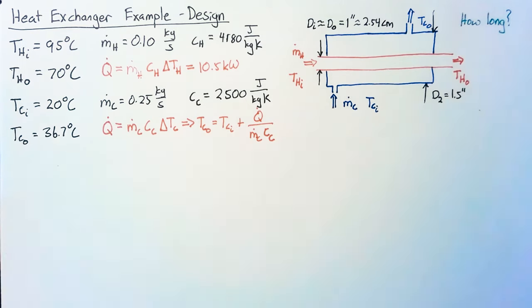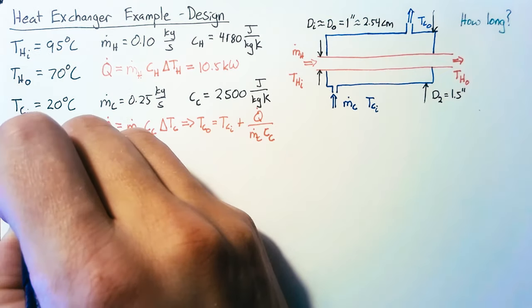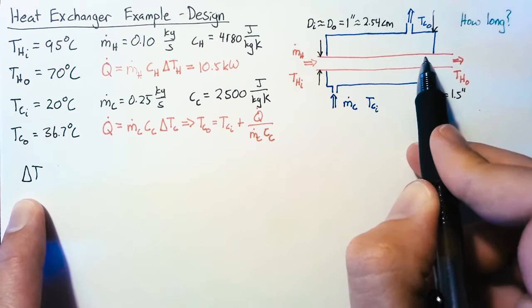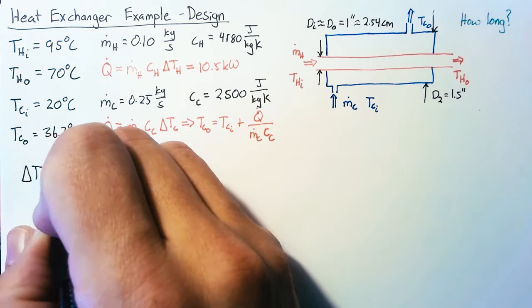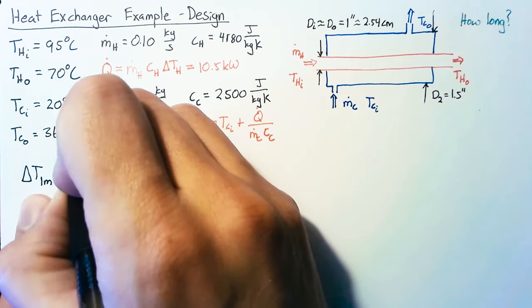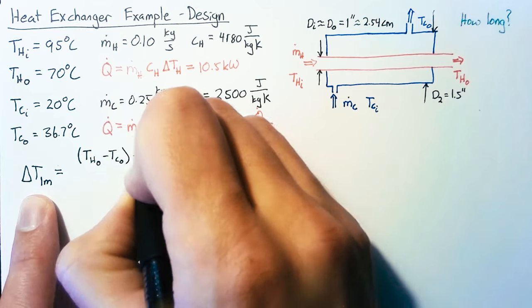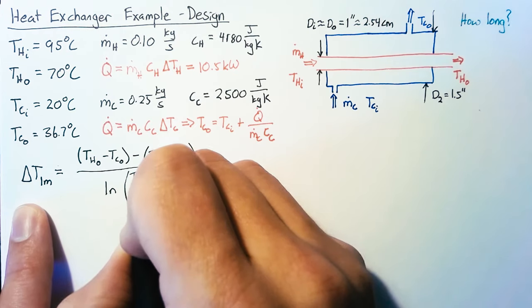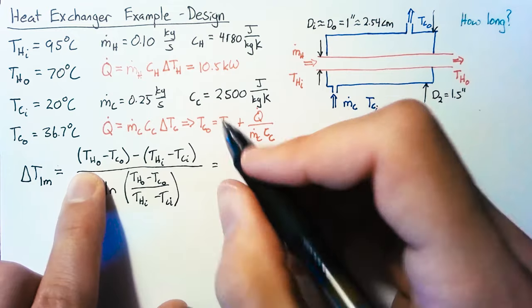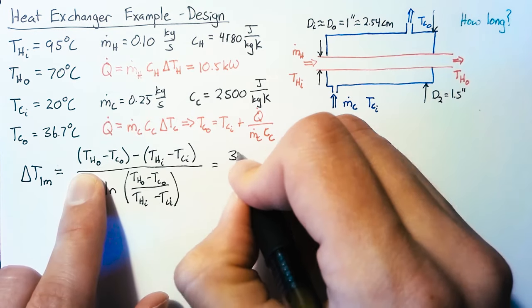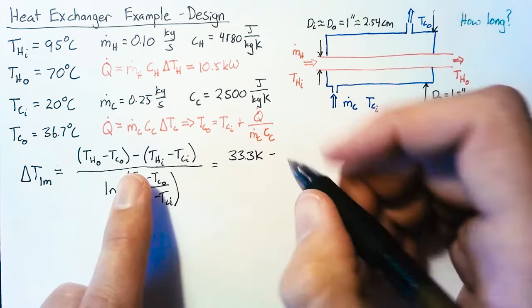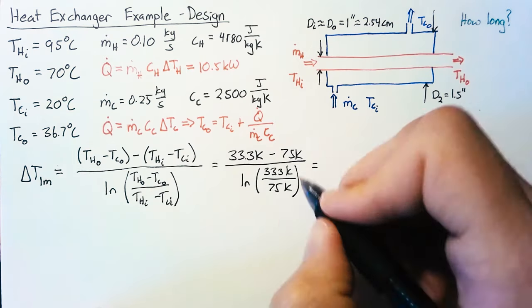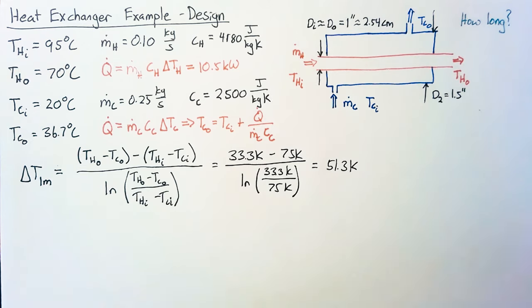We have all of our temperatures. Now we can find the temperature difference between the hot and cold fluid. The reason we need all four is because that value actually changes over the pipe's length. We could use an arithmetic mean or average, but it's more accurate to use the log mean temperature difference. That's (T_out - T_in)/ln(T_out/T_in). Plugging those values in, our outlet side difference is 70 minus 36.7, which is 33.3 Kelvin. Our inlet temperature difference is 95 minus 20 or 75 Kelvin. We end up with 51.3 Kelvin. This is our log mean temperature difference.